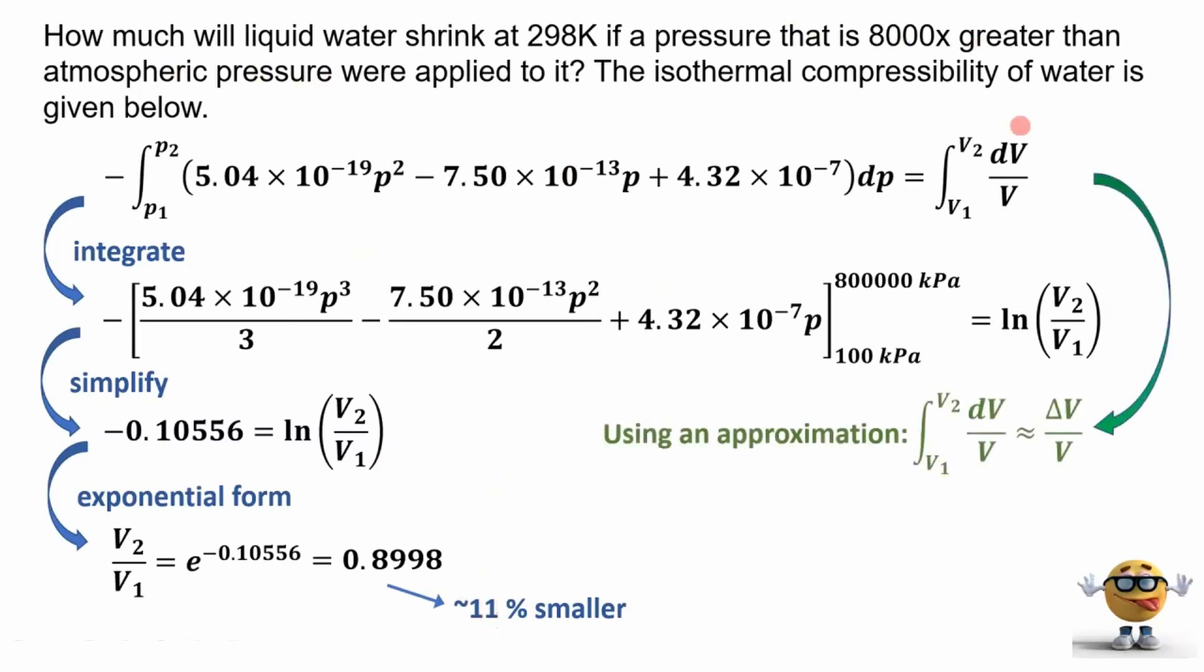Now we can do an approximation. This is doing the integral of both sides, but because liquids and solids don't shrink that much when we apply pressure, we can say that this dV over V is approximately delta V over V. We could do this approximation here. So this infinitesimal change throughout this whole thing is approximately equal to this finite delta change. And if we do that, then this number here, this negative 0.10556 becomes this delta V over V, which is approximately 9.4% smaller.